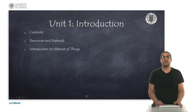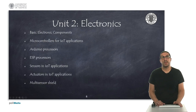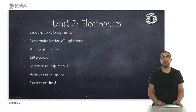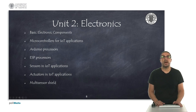In Unit 1 I will indicate two available resources and materials as well as a short introduction to Internet of Things. In Unit 2 I will provide some basic concepts of general-purpose electronics components and discuss what kind of microcontrollers we can use in IoT applications. Then I will present Arduino and ESP processors, as well as sensors and actuators used in IoT applications. At the end of Unit 2 I will present the multi-sensor shield that will be used in our exercises.